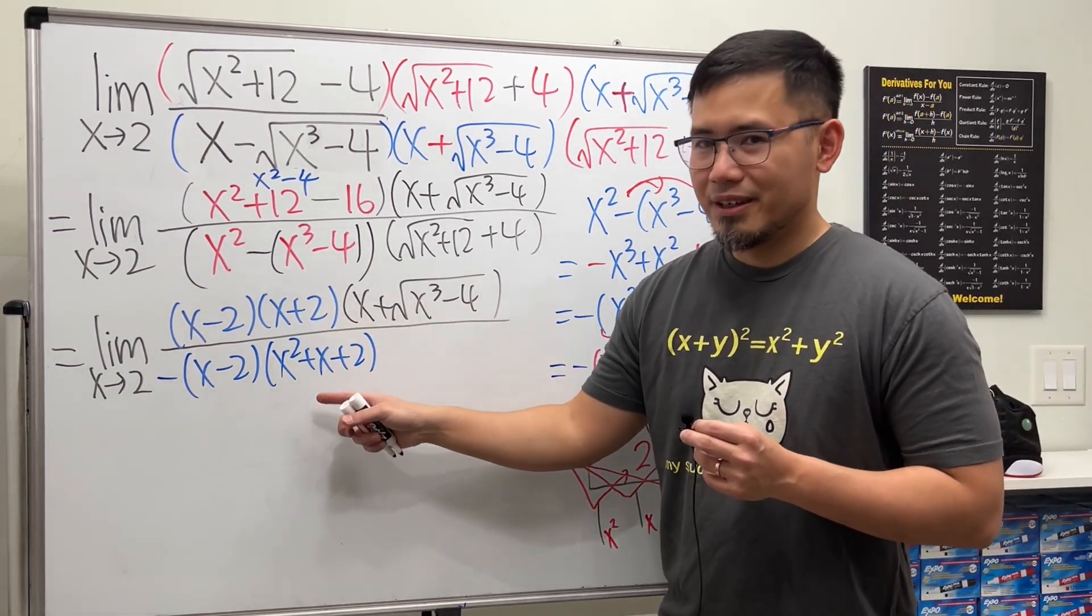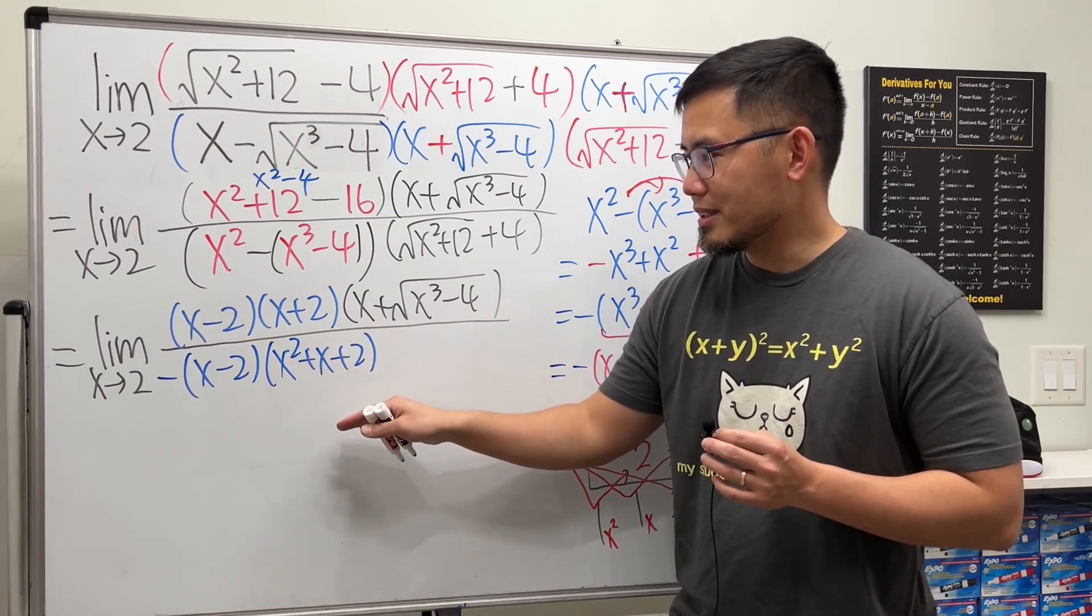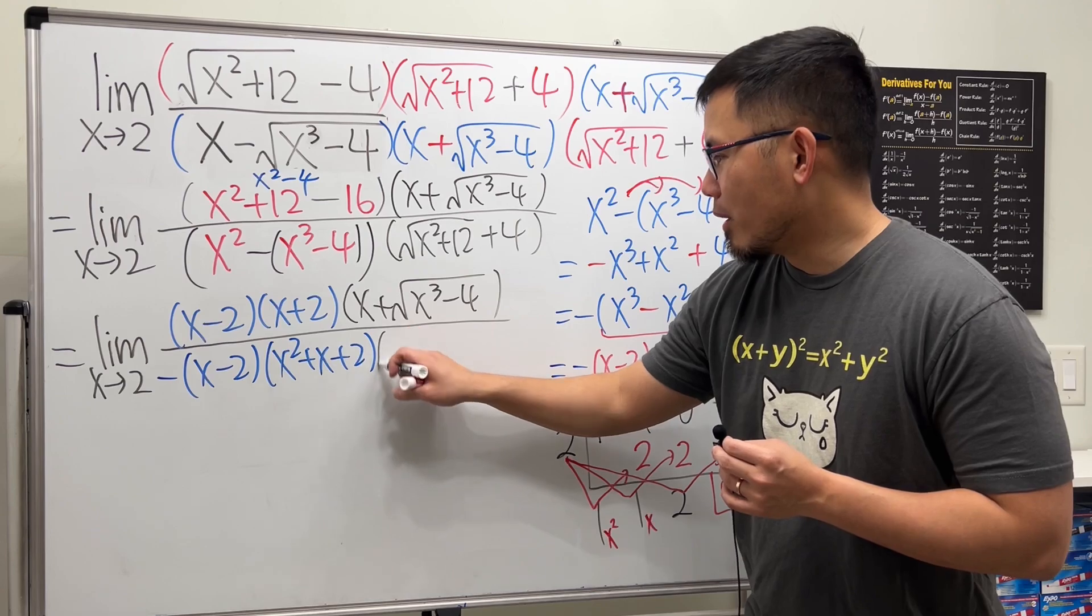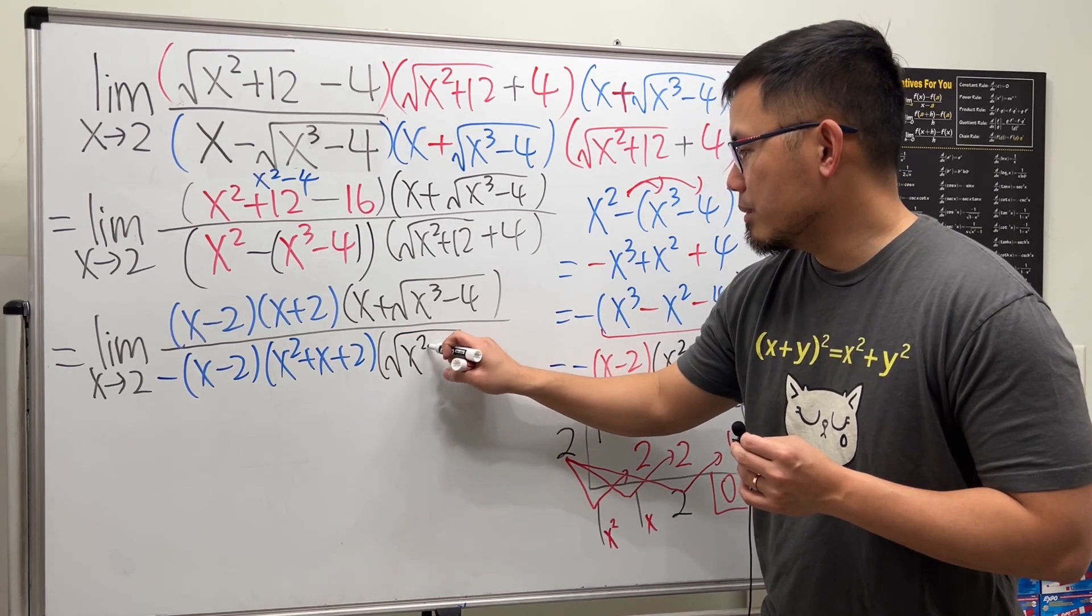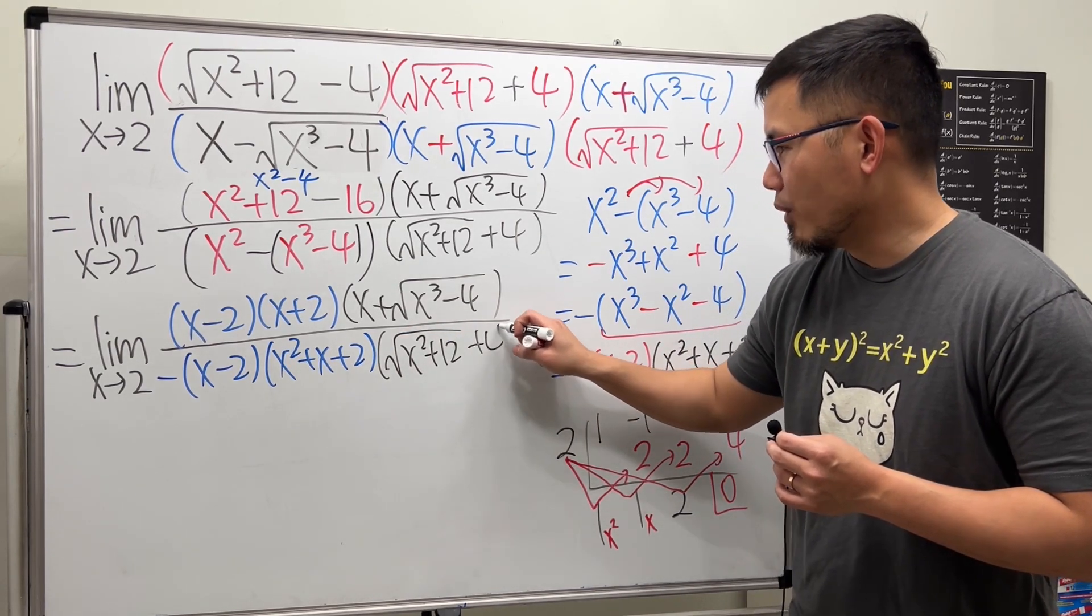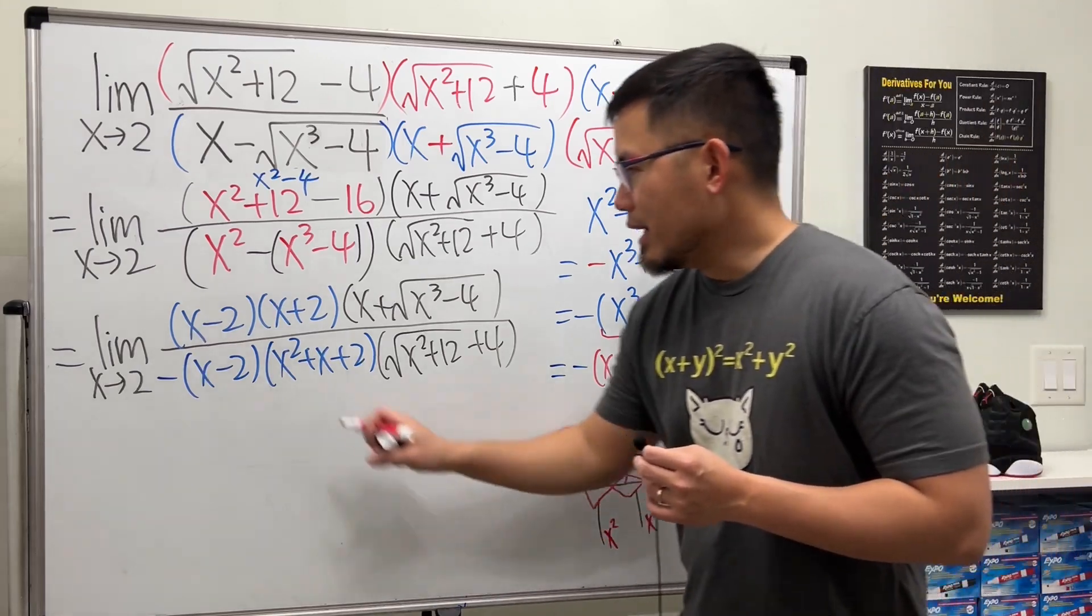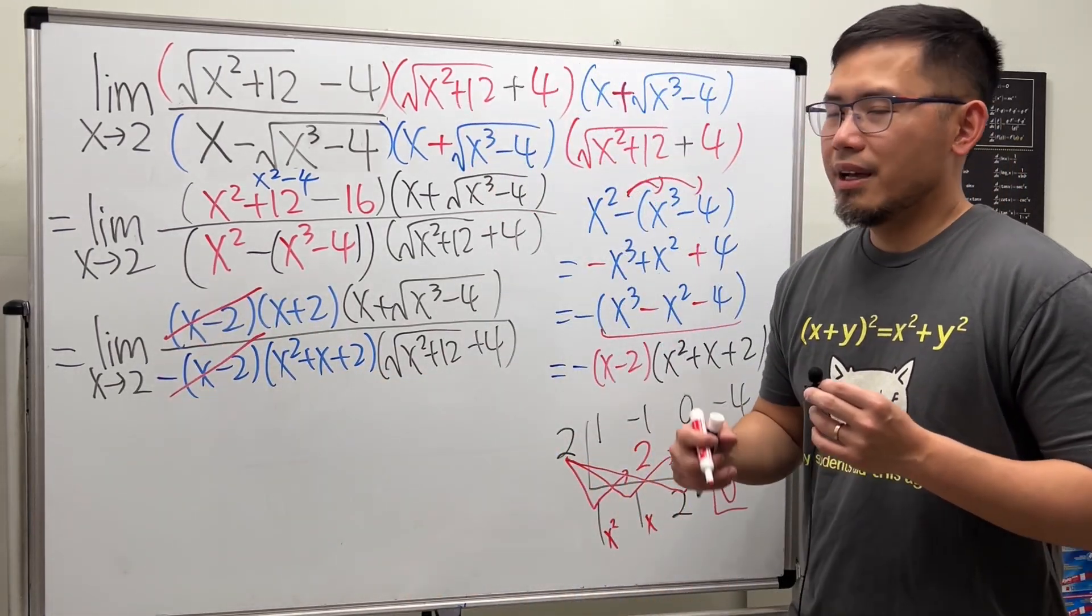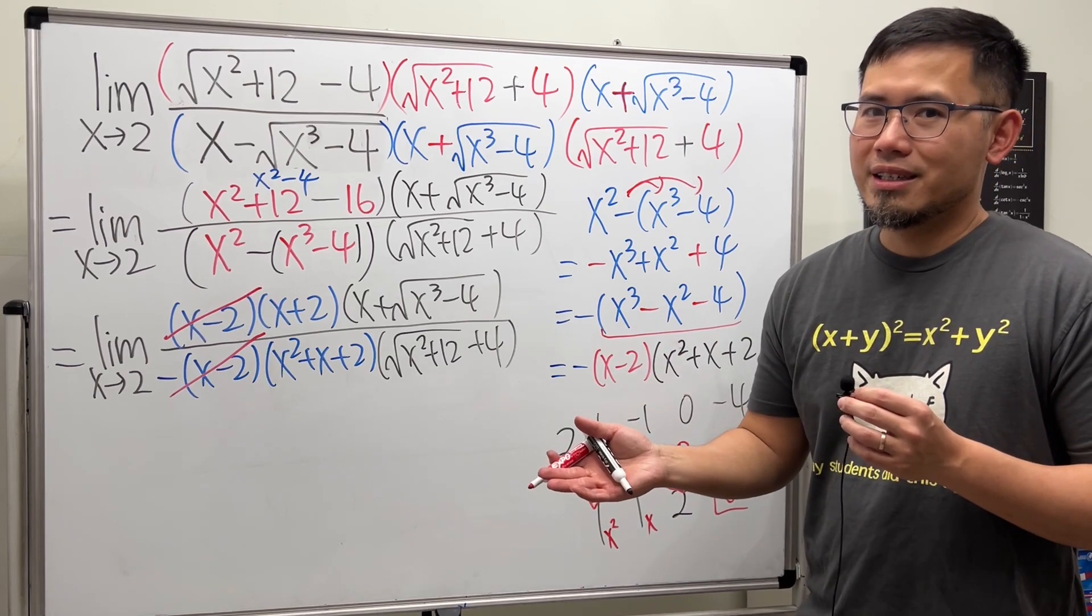Notice how similar they are, but they are not the same. You cannot cancel this out, but you could cancel this and that. Anyway, this right here, we have one more part. Square root of x squared plus 12, and then plus 4. All right. As I told you, x minus 2, x minus 2, cancel out nicely, and you know you're on the right track. Finally, just put 2 into all the x's and just work that out.